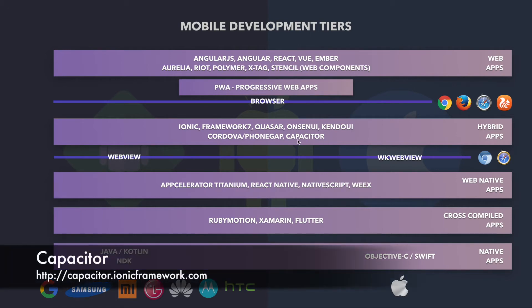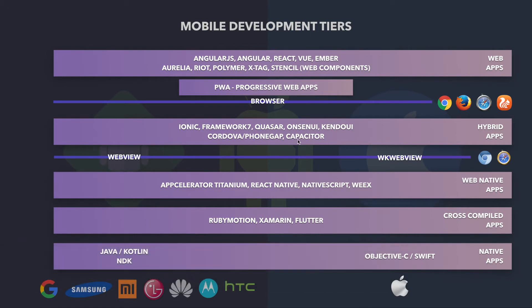The first one is Capacitor. Capacitor is the technology created by the Ionic team to replace what you can do with Cordova. The Ionic team decided to create their own implementation of the Cordova layer. That makes sense because they are providing the whole environment for the developer — it seems fair for them to provide everything instead of depending on third parties. Capacitor is actually very new.